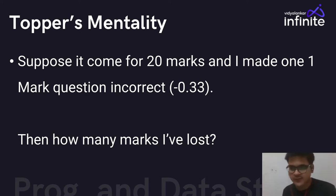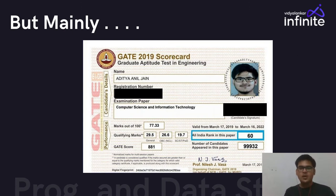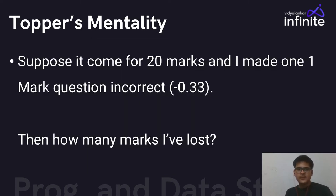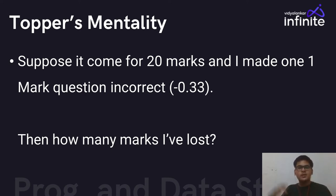To show how much these marks matter: my All India Rank was 60 with 77.33 marks. Someone who got 78 marks had a rank of around 40. That's just a 20-rank difference in this case, but what if it shifts you from IIT Bombay to some other IIT or NIT? I'm currently pursuing my Master's in Computer Science from IIT Bombay. That's why every fraction of a mark matters.